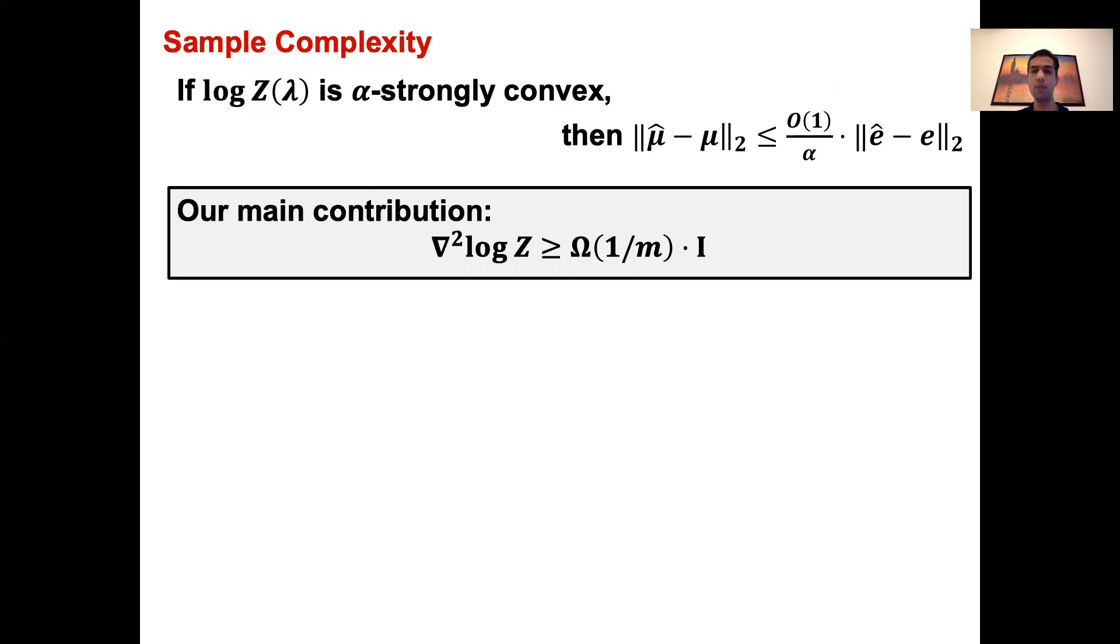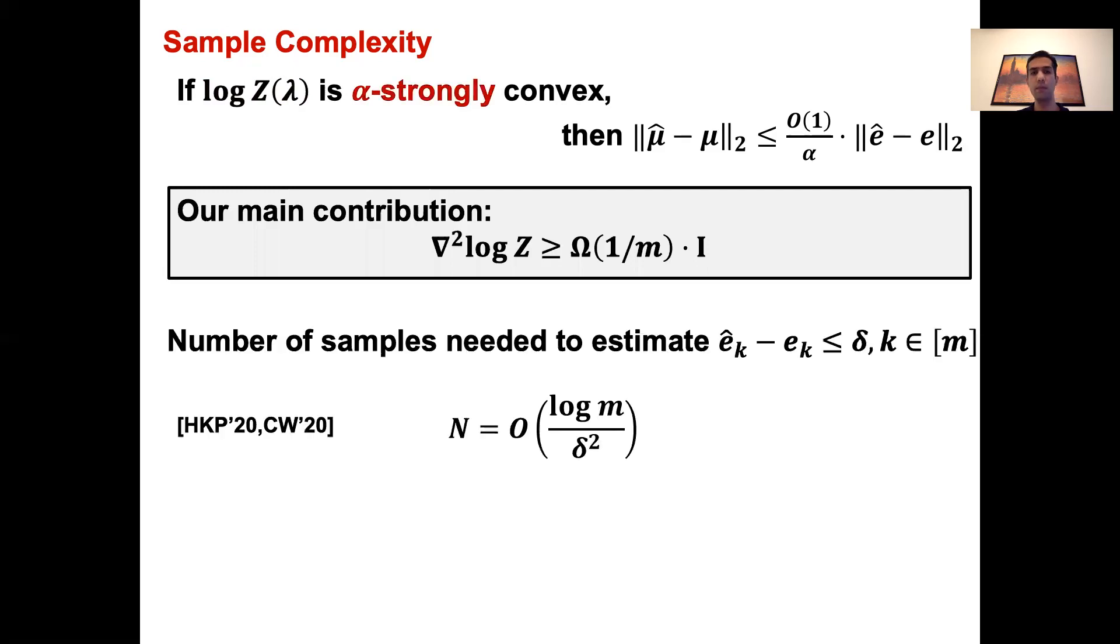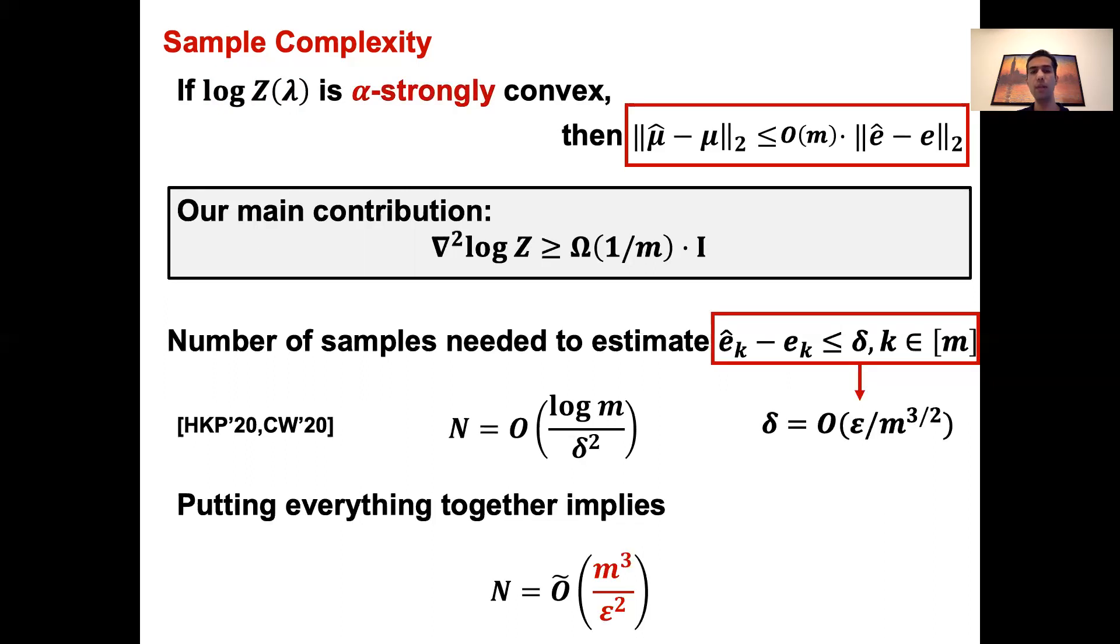So our main technical contribution is proving this for quantum-partition function, meaning the log-partition function is strongly convex with parameter alpha being order 1 over M. I will shortly sketch the proof of this, but before that, let me show you how this implies the claimed sample complexity. The number of samples needed to estimate each local expectation E_k with error delta scales as log M over delta squared, which is similar to what you expect classically. Then using the strong convexity we have, we see that to have an overall error of epsilon for the interaction coefficients μ in L2 norm, we need delta to be order epsilon over M to the 3/2, which implies besides the log factors and dependency on beta, order M cubed over epsilon squared sample complexity.